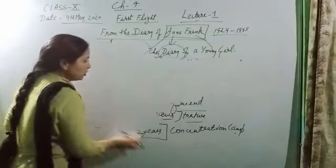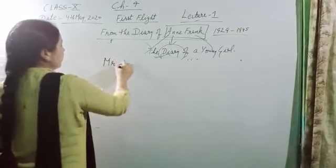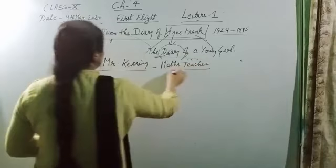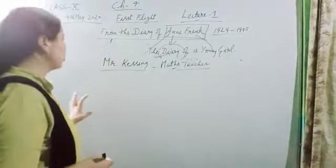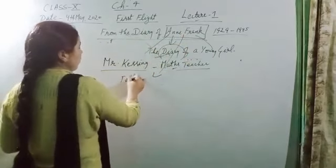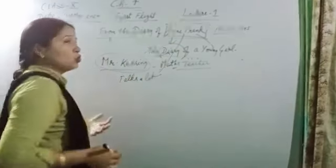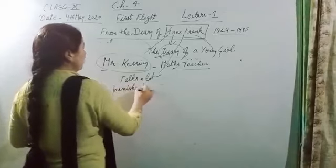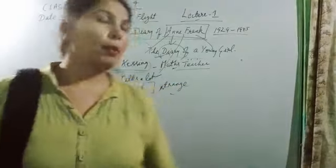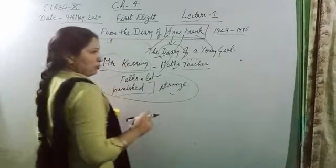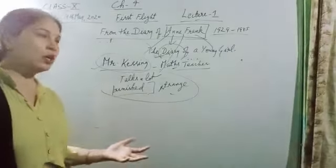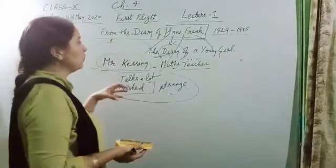In this chapter, there is only description of the teacher - Master teacher Mr. Keesing. Anne was not having good terms with this teacher. She was a chatterbox - she talked a lot in class and he was irritated by that, so he punished her in a very strange manner. We will read about that in the chapter. It was a precious and strange moment for her, so she wrote it in her diary.